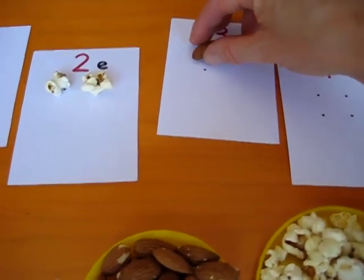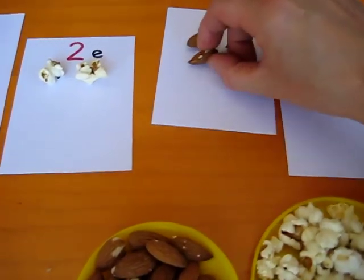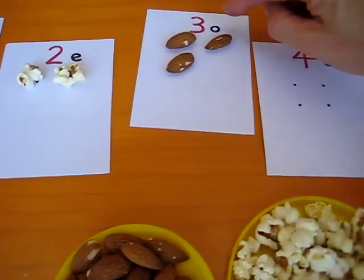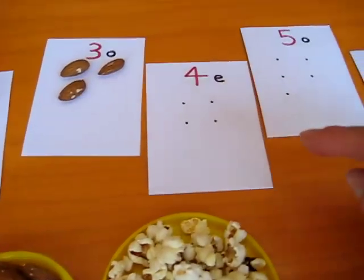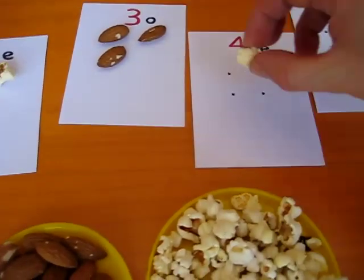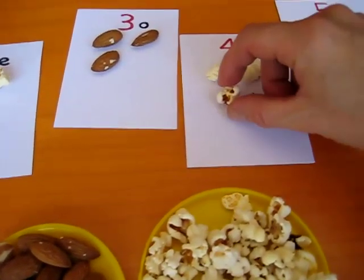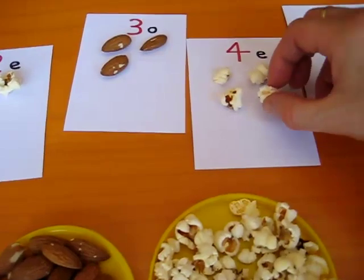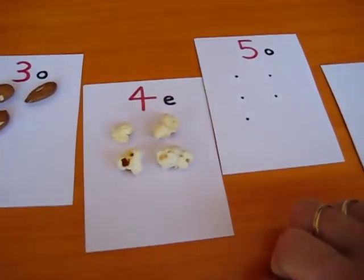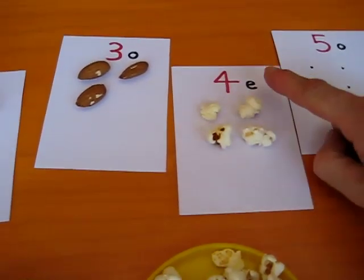One, two, three. Three is odd. O for odd. And then we go to four. One, two, three, four. Four popcorns. Four is even.